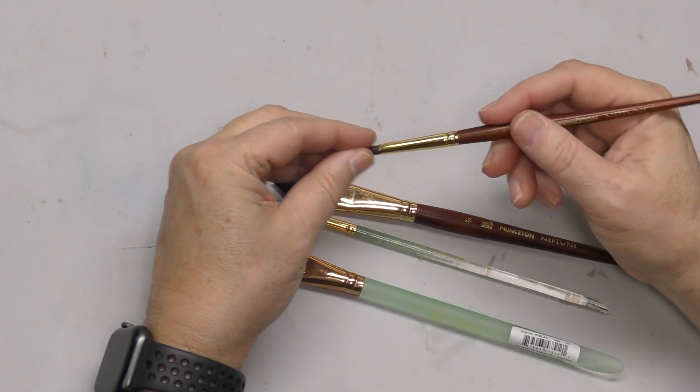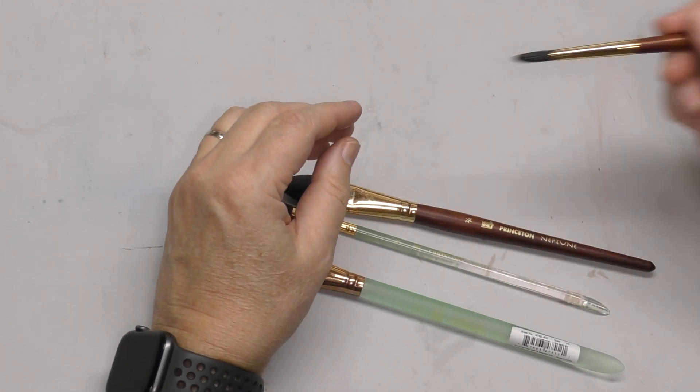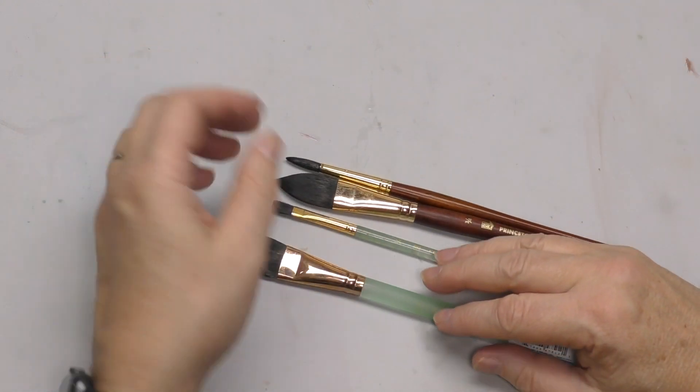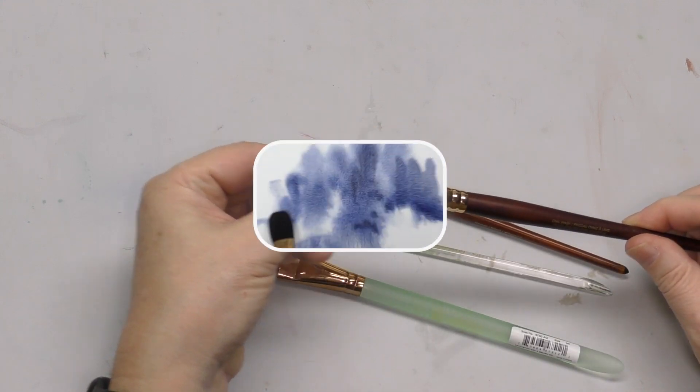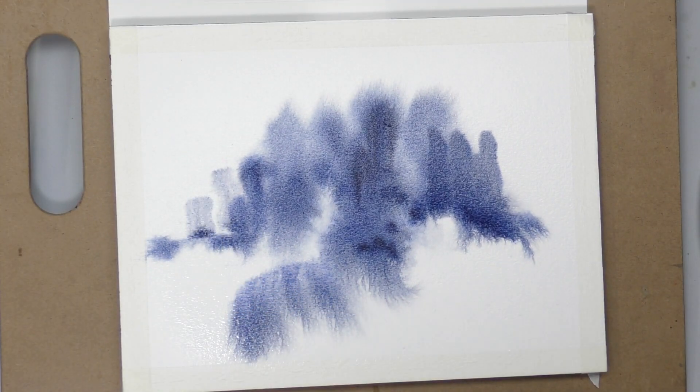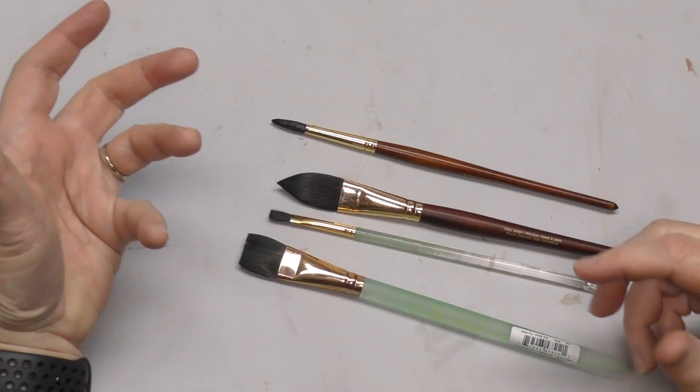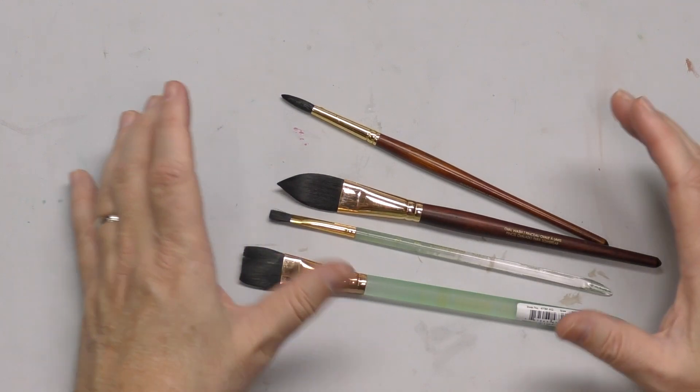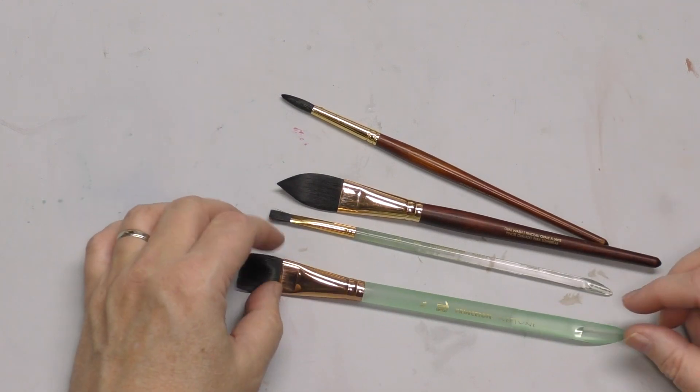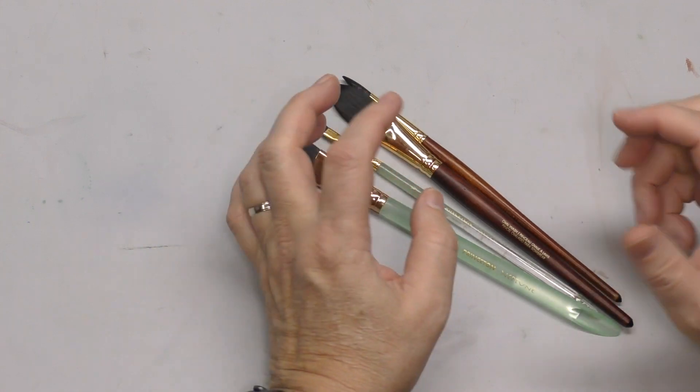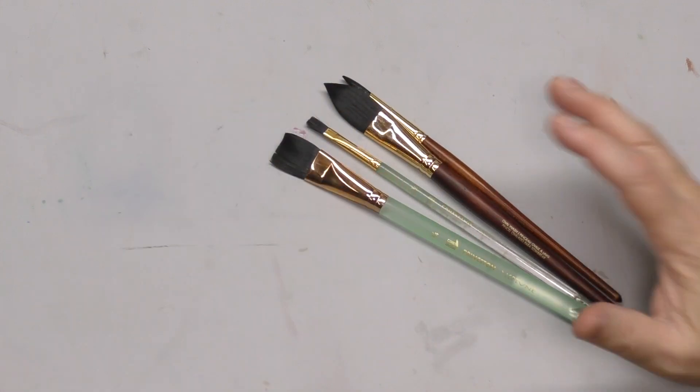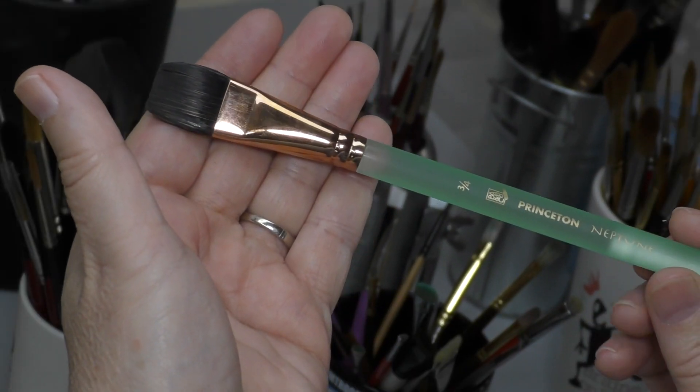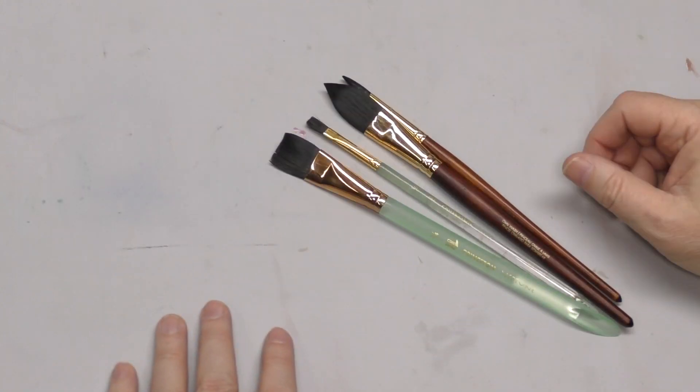I tend to not use the rounds very much because they don't, at least the ones I've tried, don't have as good of points. So, if I need a point, I don't get a great point with a Princeton Neptune. It could be just the ones that I have. I don't know. That's not necessarily a big deal because sometimes you want a brush with a rounded tip. You don't want one that has a point. I love their flats. I tend to use the flats and the oval wash the most when I'm using a Princeton Neptune. I also like their rigger. I use their rigger a good bit. So, another great high quality brush intended for watercolor.